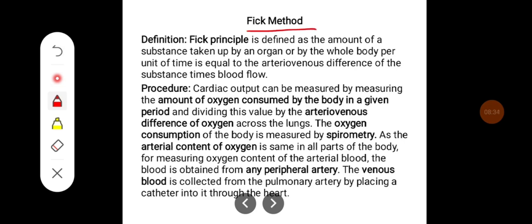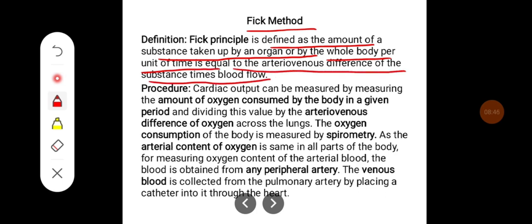Fick's method: The Fick principle is defined as the amount of substance taken up by any organ or by the whole body per unit time, which is equal to the arteriovenous difference of the substance times blood flow. Cardiac output can be measured by measuring the amount of oxygen consumed by the body in a given period and dividing this value by the arteriovenous difference of oxygen across the lungs.